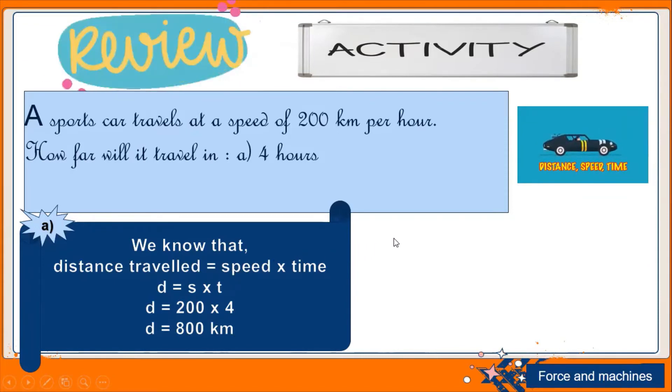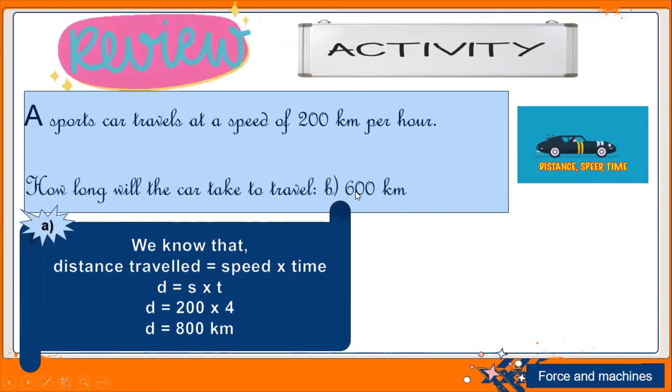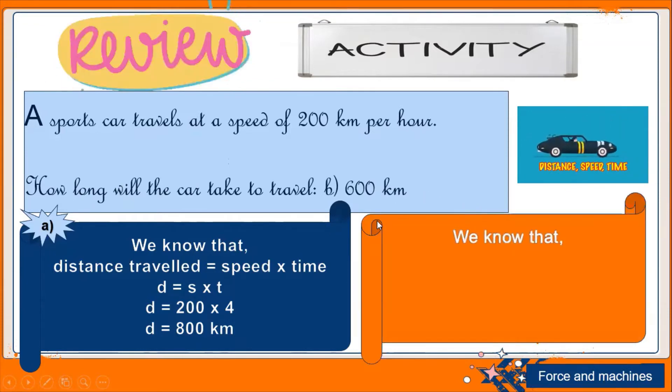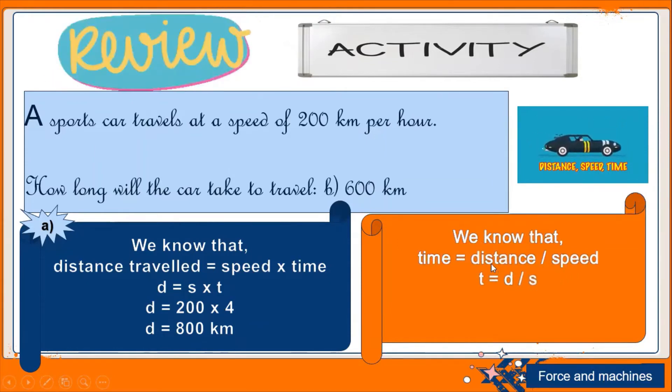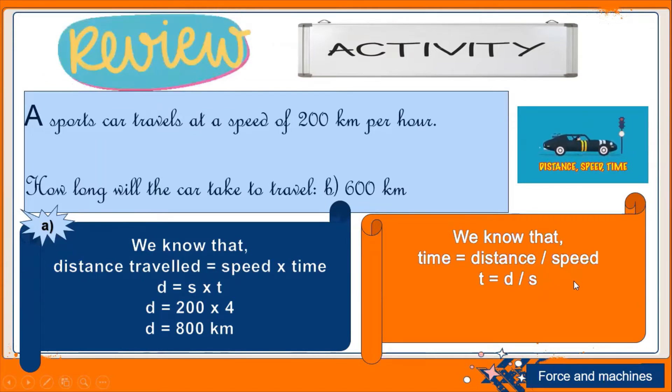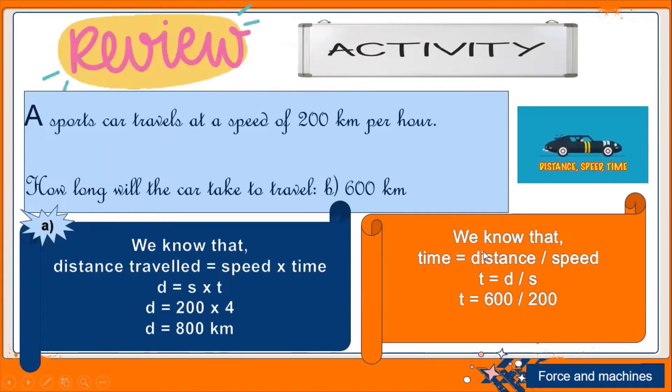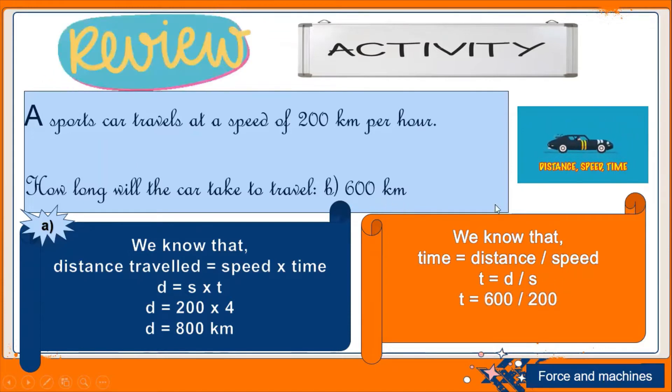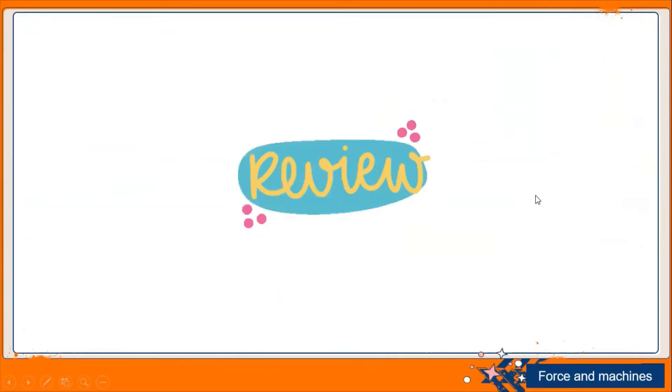Again for part B, I changed the values from the book. A sports car travels at speed of 200 kilometer per hour. Now how long - that means now we are about to use the formula for time. So time equals distance divided by speed. You can express by a symbol: T represents time, D represents distance, and S represents speed. Here we have distance given as 600 kilometers and speed given as 200 kilometers per hour. Just put in the values and then solve it. So time equals three hours. I hope that you understood this practice. It's a very important part of our lesson in Unit 11, Force and Machines.